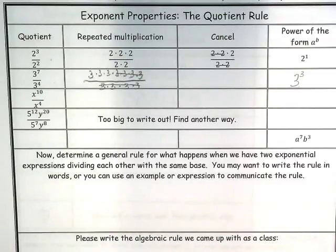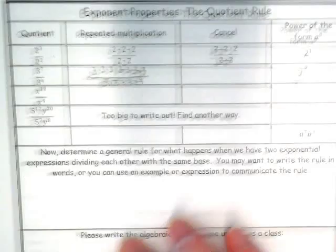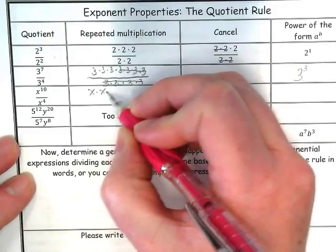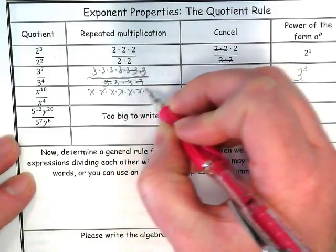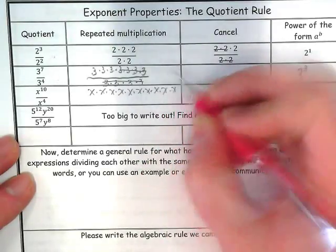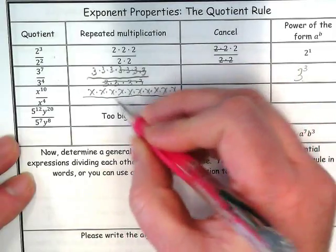Okay, how about for the next one? Ten Xs over four Xs.